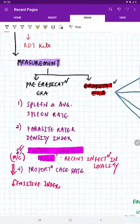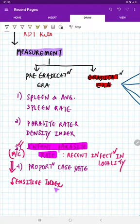Remember, this infant parasite rate is the most common and sensitive index which you have been using in pre-eradication era to measure malaria. This is more sensitive because it shows recent infection in locality. Next is proportion case rate, crude rate, crude calculation or measurement. This is all pre-eradication.